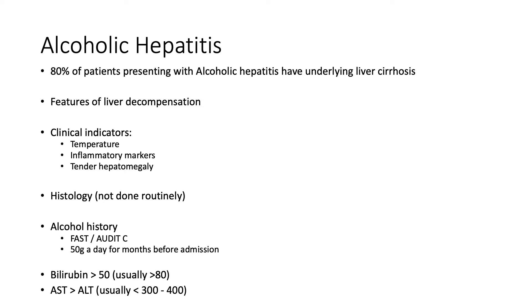The other important thing is bilirubin and liver blood tests. Most alcoholic hepatitis trials have a minimum bilirubin level in their inclusion criteria. We would normally expect a bilirubin minimum of 50, and usually above 80, to diagnose alcoholic hepatitis. The ALT and AST levels can also be important. Usually in alcoholic hepatitis, AST is greater than ALT, and it's very unusual to see an ALT above 300, certainly not above 400. If ALT is above this level, we need to think about alternative causes such as drug-induced hepatitis, autoimmune hepatitis, or viral hepatitis, and whether a liver biopsy is needed.